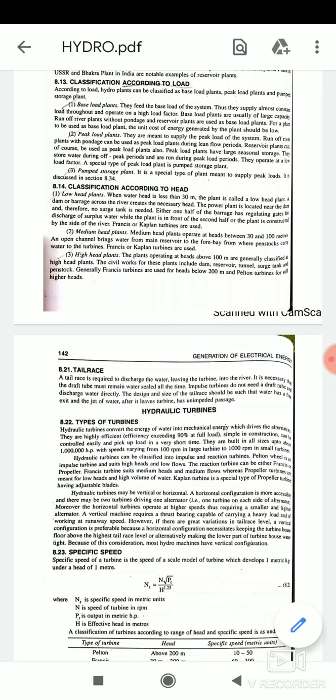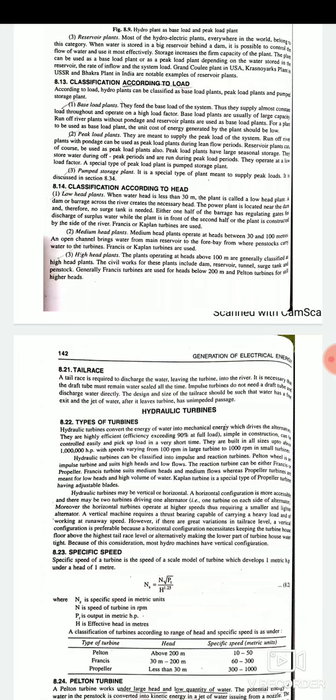First, in low head plants, when water head is less than 30 meters, that comes in the category of low head plants. A dam or barrage across the river creates the necessary head. The power plant is located near the dam and therefore no surge tank is needed. Either one half of the barrage has regulating gates for discharge of surplus water while the plant is in front of the second half, or the plant is constructed by the side of the river. Francis or Kaplan turbines are used in the low head plants.